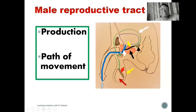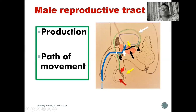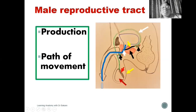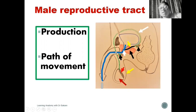From the prostatic urethra, the ejaculate is further pushed down into the membranous urethra, then finally into the penile or spongy urethra. Before that, we also have the bulbourethral gland, which secretes a pre-ejaculate that is initially released into the penile urethra. This helps neutralize the acidic environment of the spongy or penile urethra, the terminal region. The spongy urethra allows for the passage of both semen and urine, so the pre-ejaculate cleans the internal environment before the final release of the main ejaculate.